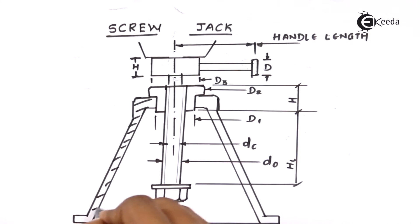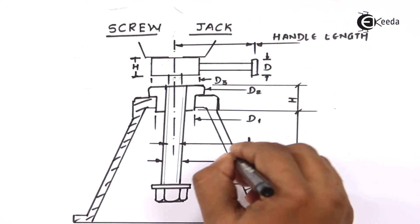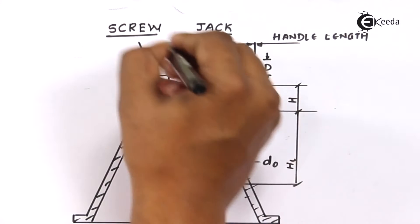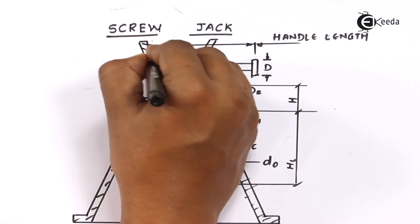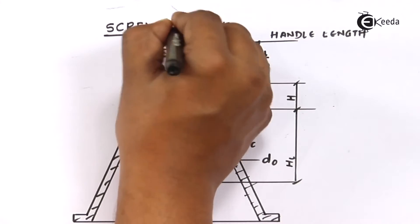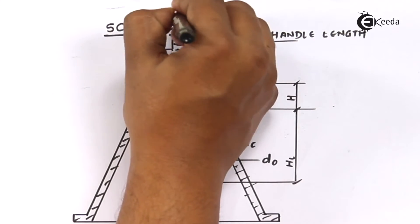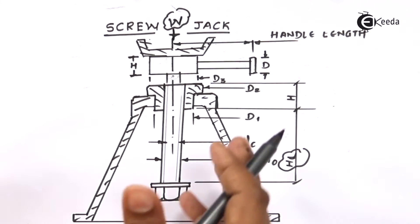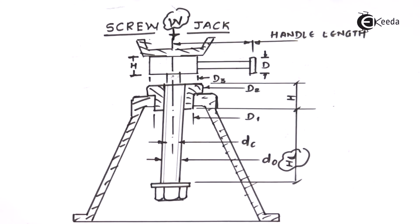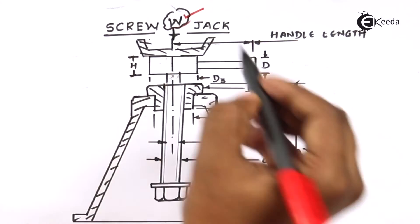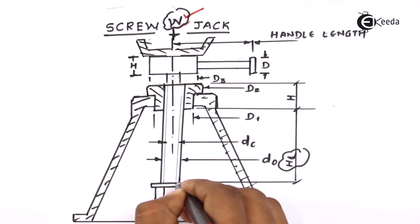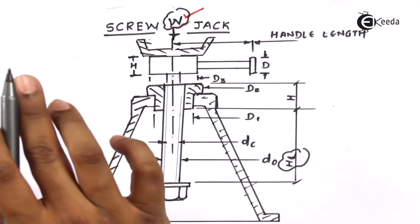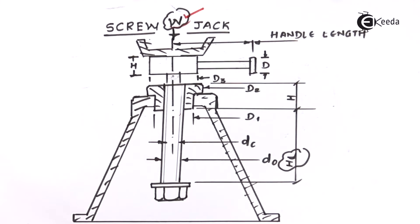It shows that it's a cross section of this particular component. Like we have seen in the previous lectures: this is the frame, this is the nut, this is the screw, and this is the cup. There is a hatching section where the actual load is going to act. So this is one of the given parameters — the load — and this is the second given parameter, H-L, the lifting height. The basic problem is to design this screw jack where the only parameters given are the axially acting load and the lifting height.